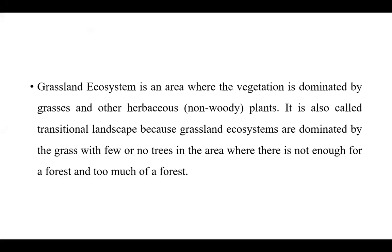Grassland ecosystem is an area where the vegetation is dominated by the grasses and other herbaceous non-woody plants. It is called a transitional landscape because grassland ecosystems are dominated by the grass with few or no trees in that area.